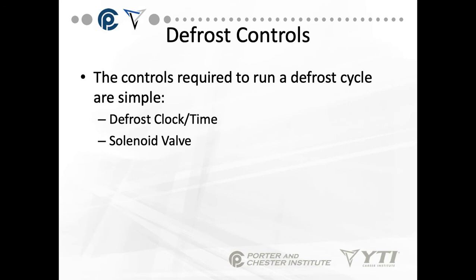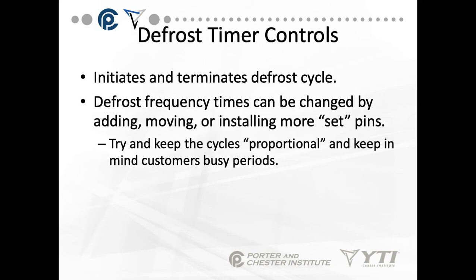The controls required to run a defrost cycle are simple: a defrost clock or timer and a solenoid valve in the case of hot gas defrost. The defrost timer control initiates and terminates the defrost cycle. The defrost frequency times can be changed by adding, moving, or installing more set pins, or in the case of digital clocks, just more set points.